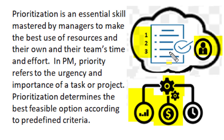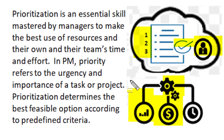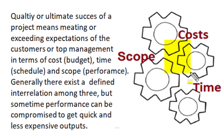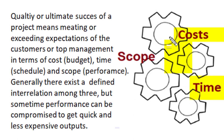In project management, priority refers to the urgency or importance of a task or a criteria to achieve best benefits in any circumstances. The prioritization determines the best feasible options available to project managers according to predefined criteria of project implementation, i.e. cost, time and performance scope. Quality or ultimate success of any project means meeting or exceeding the expectation of customers, top management or other stakeholders in terms of cost, schedule time and scope.